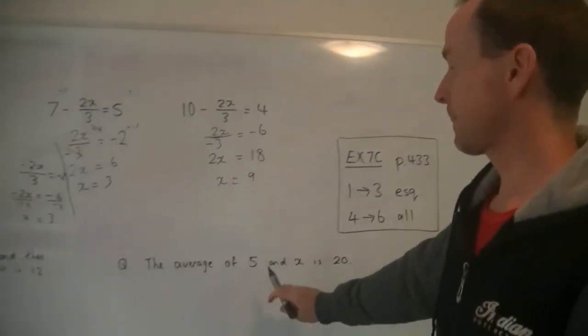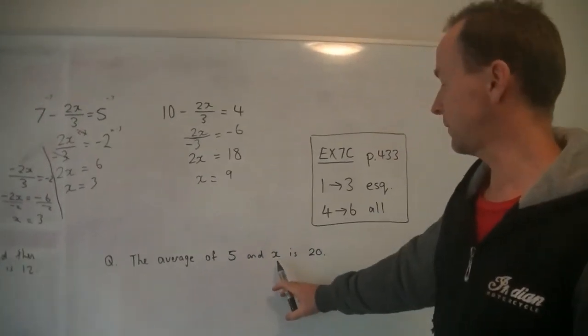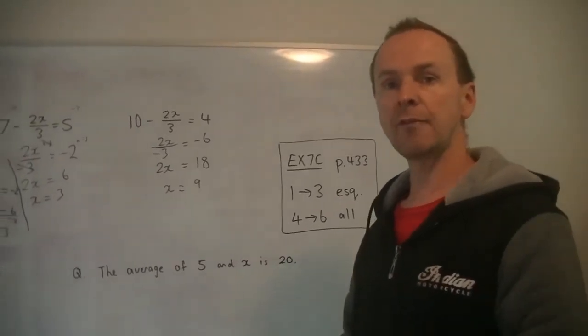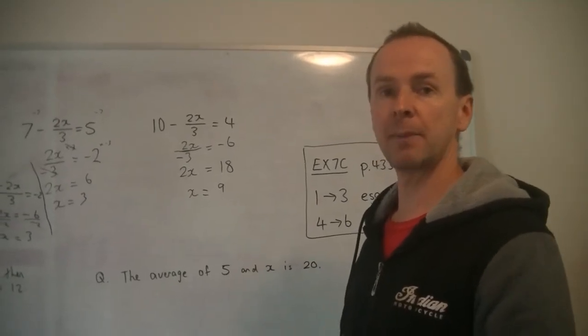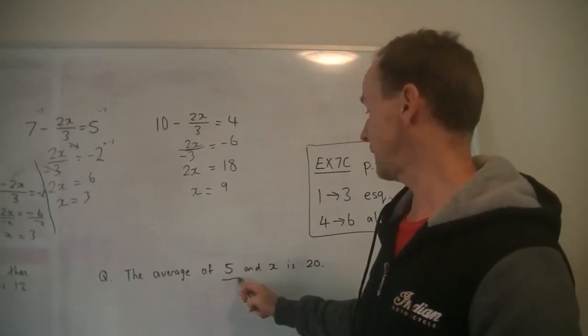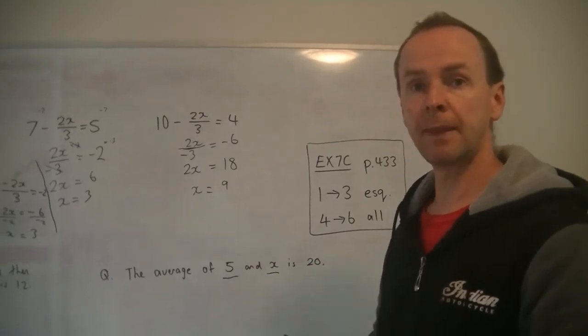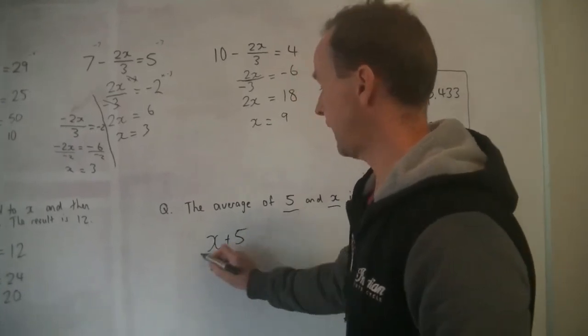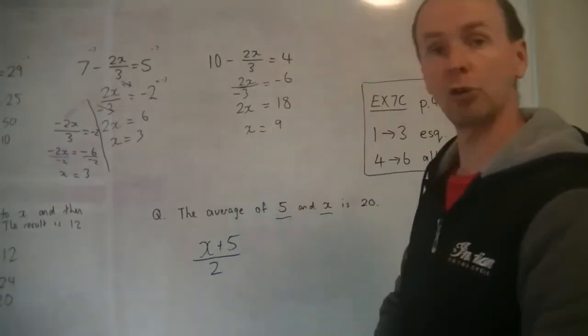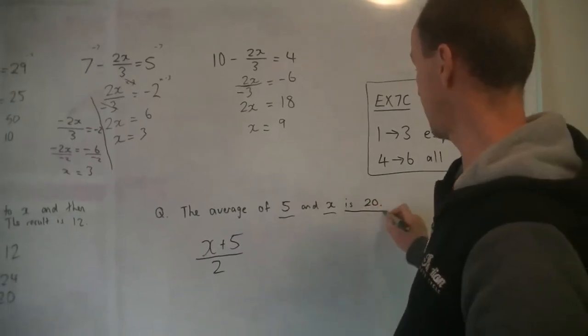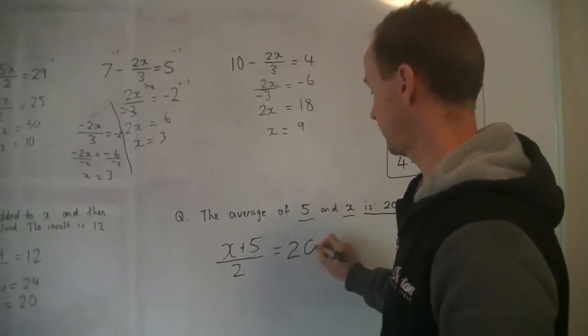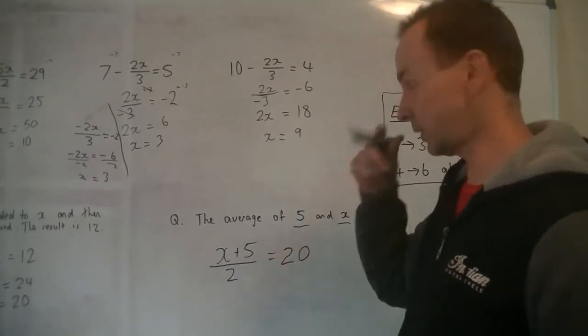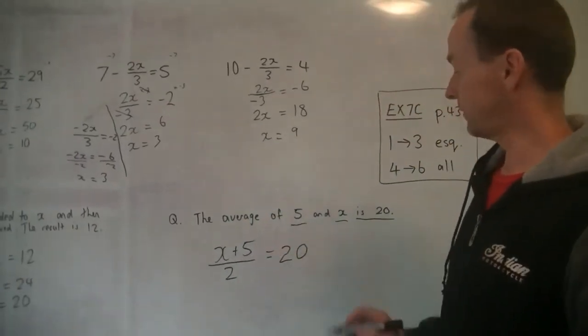Now let's go over this one here. The average of 5 and x is 20. Find the value of x. What's an average? An average is when you add the numbers up and divide by how many numbers there are. So the average of these two numbers, you'd have to add them together and then divide it by 2. So the average of 5 and x, so x plus 5. The average of those means divide it by 2. So that's the average of those and it says the answer is 20.